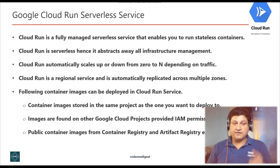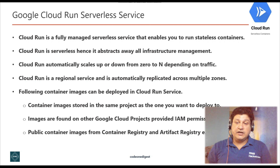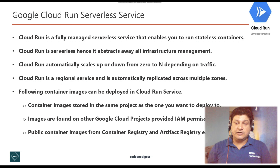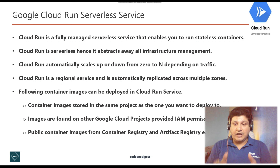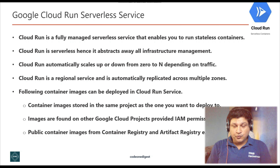You need not worry about disaster recovery, replication, or backup — it is taken care of completely by the cloud provider. We can deploy a container image from various sources in Cloud Run: from the same Google Cloud project, from another Google Cloud project with IAM permissions, or from any public registry like Docker Hub. I hope the concept of Cloud Run serverless service and when to use it is now clear.